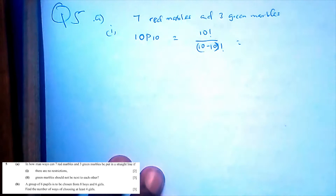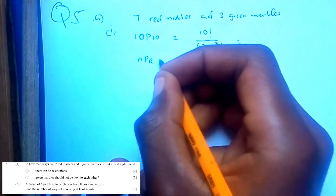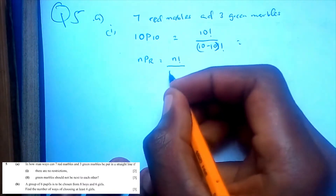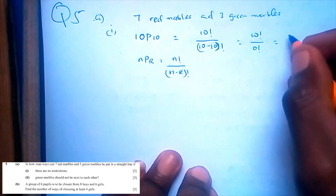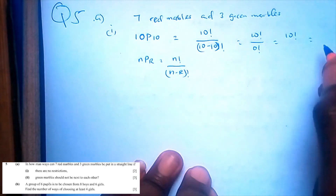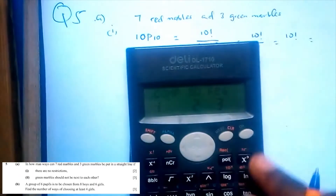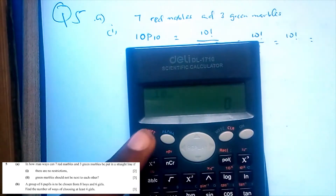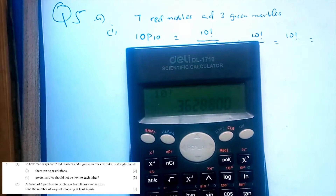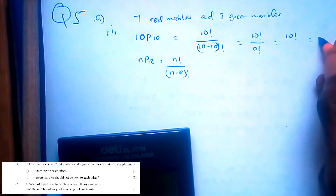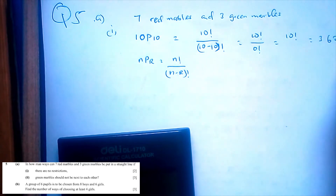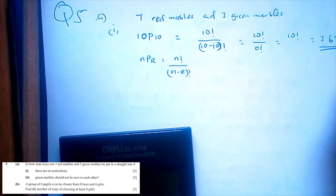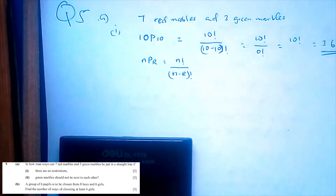For permutations, the formula is nPr equals n factorial over (n minus r) factorial. So this would be 10 factorial over 0 factorial. Zero factorial is just 1, so that is 10 factorial, which is equal to 3,628,800. So that is our answer.